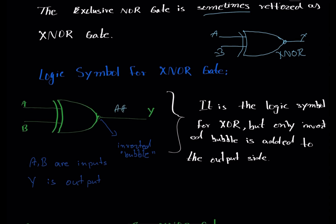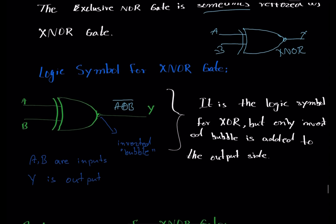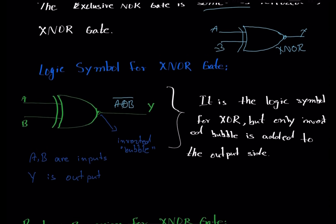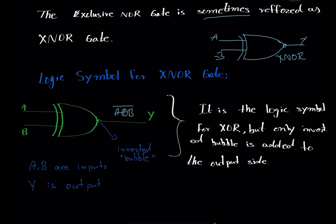Where A and B are our inputs and Y is our output. We can express it as A exclusively NORed with B — that is the boolean symbol. A exclusively NORed with B means A XORed with B but since there's an inverting bar over it, that will be exclusively NORed with input B to give output Y. So it's the XOR gate logic symbol but with an inverted bubble added to the output side.